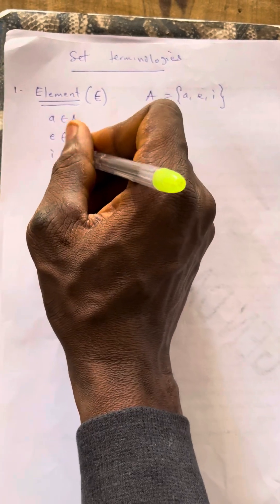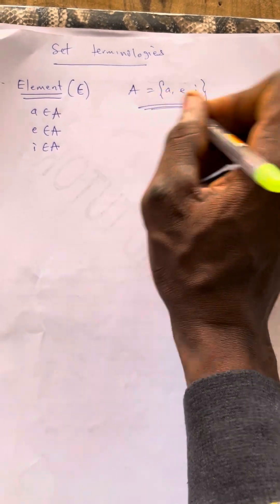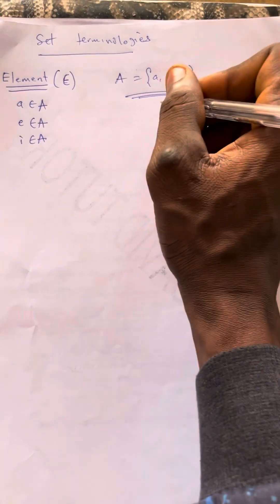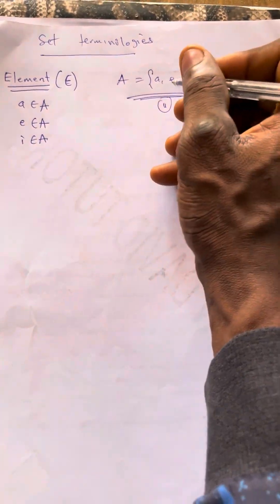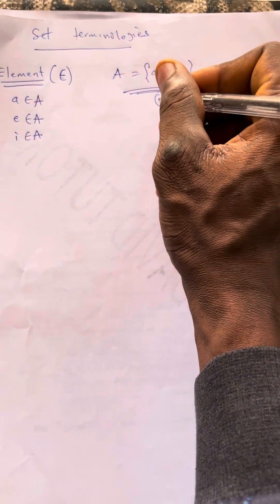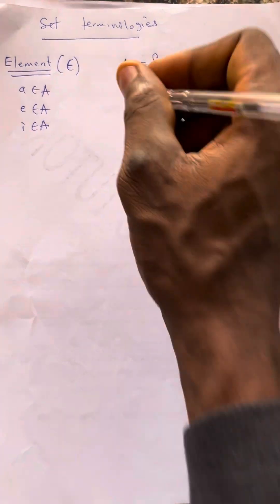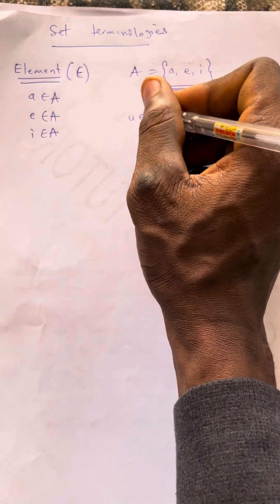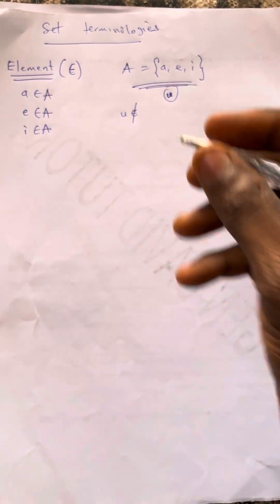I is an element of set A. But at this point, there is no U inside this set. There is no U as part of the elements of set A. Then I can say that U is not — if you want to say it's not, you put a slash — it's not an element of A. This is the notion of set membership.